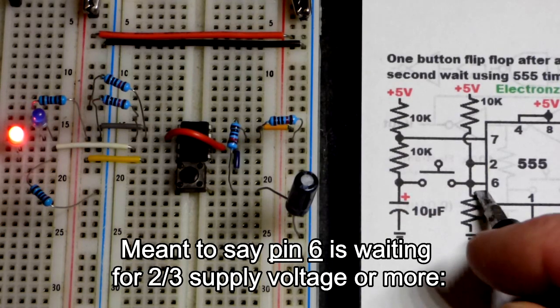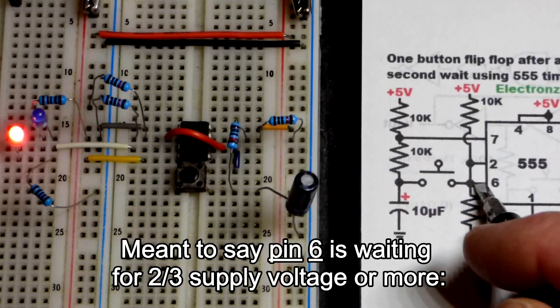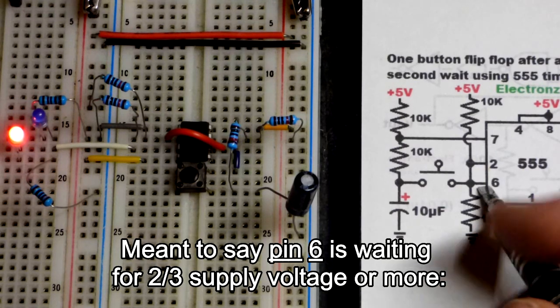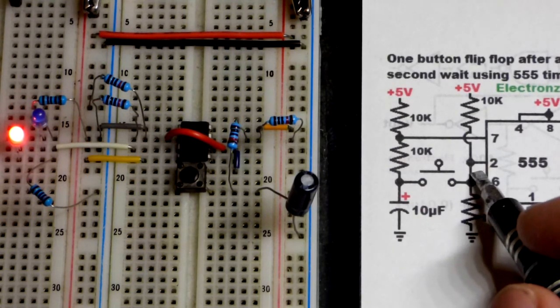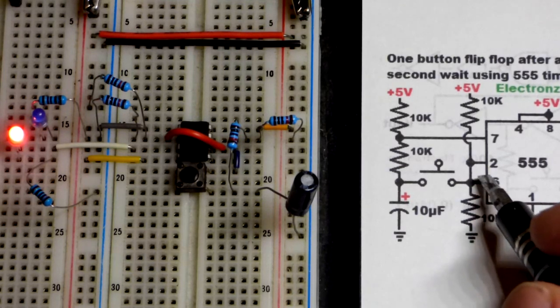Pin two waits for one-third of the supply voltage or less, then it sets the output high. Pin six is waiting for two-thirds of the supply voltage or more, then it sets the output low. In between that voltage range, between one-third and two-thirds supply voltage, it doesn't do anything.